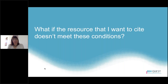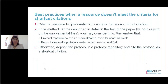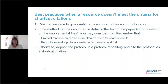What if the resource you want to cite doesn't meet these conditions? You can still cite the resource to give credit to its authors, but not as a shortcut or replacement for part of your method section. If the method is relatively simple and can be described in detail in the text or supplemental files, you could consider doing that. However, protocol repositories that provide step-by-step listings of your methods can be a more effective way of sharing methodological information even for short protocols, making protocols easier to find, version, and fork. If you can't describe the method in your text, you must deposit a protocol in a repository and can then cite it as a shortcut citation.